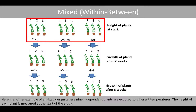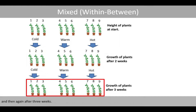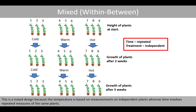Here is another example of a mixed design where nine independent plants are exposed to different temperatures. The height of each plant is measured at the start of the study, then again after two weeks of exposure to different temperatures, and then again after three weeks. This is a mixed design because temperature is based on measurements on independent plants, whereas time involves repeated measures of the same plants.